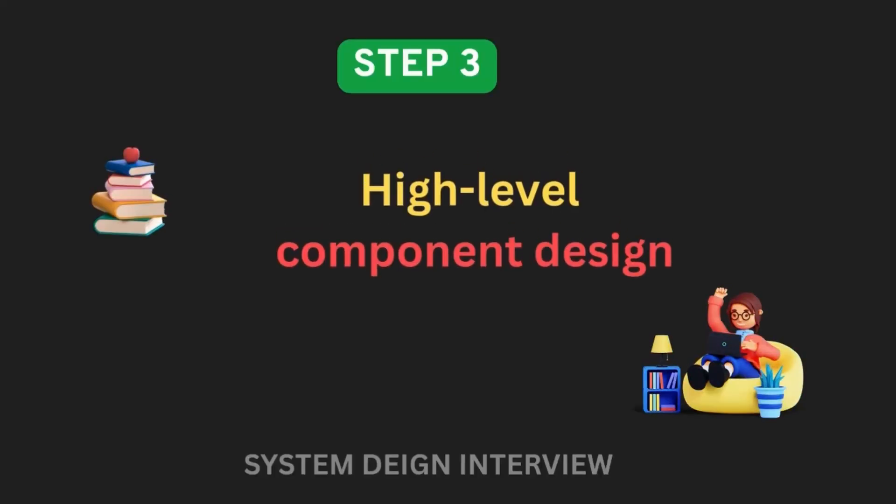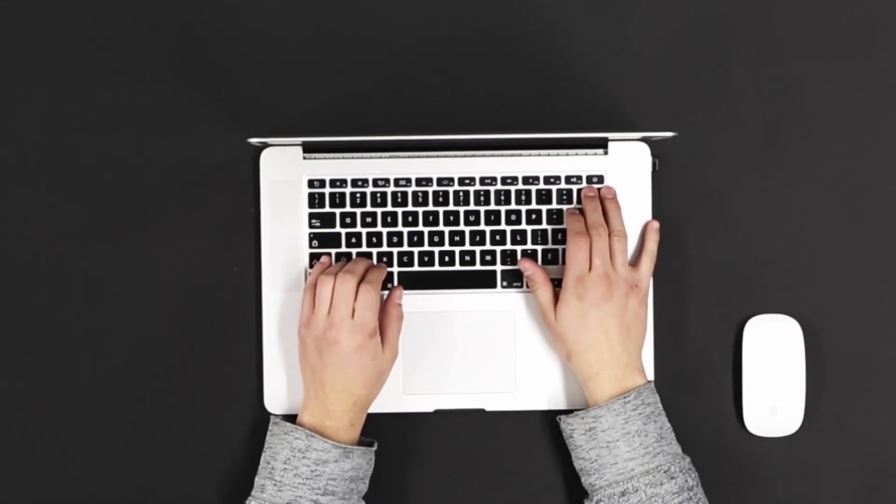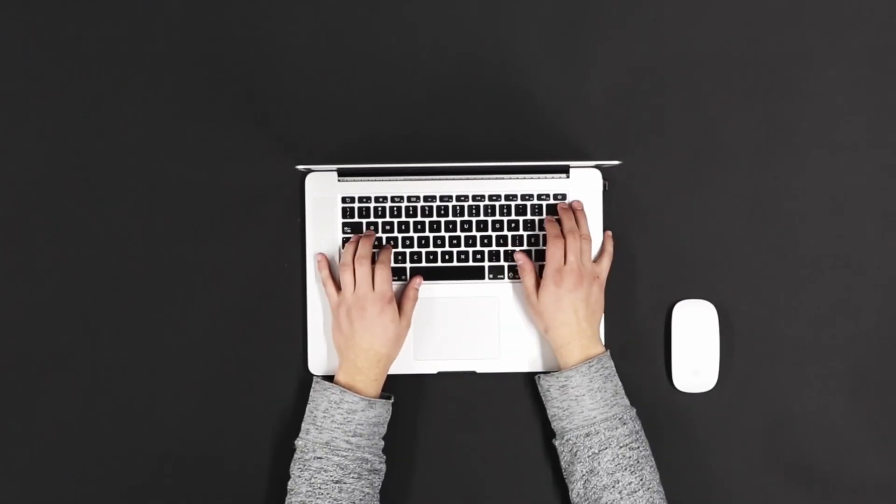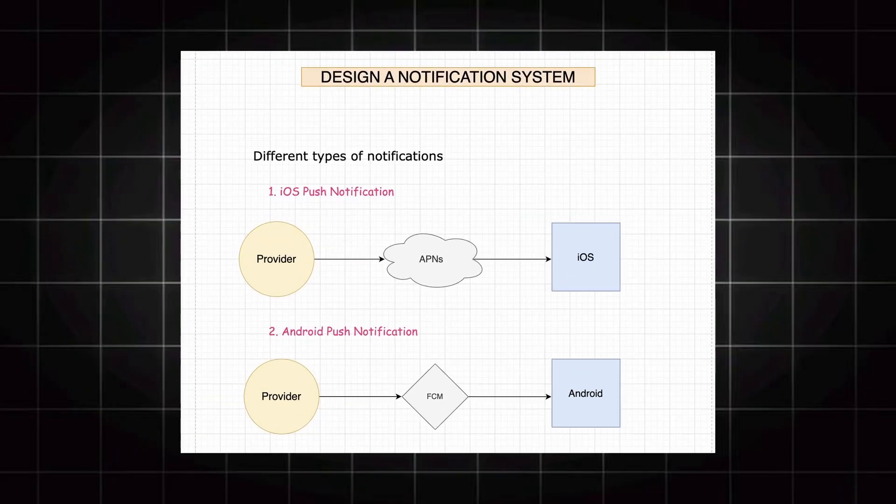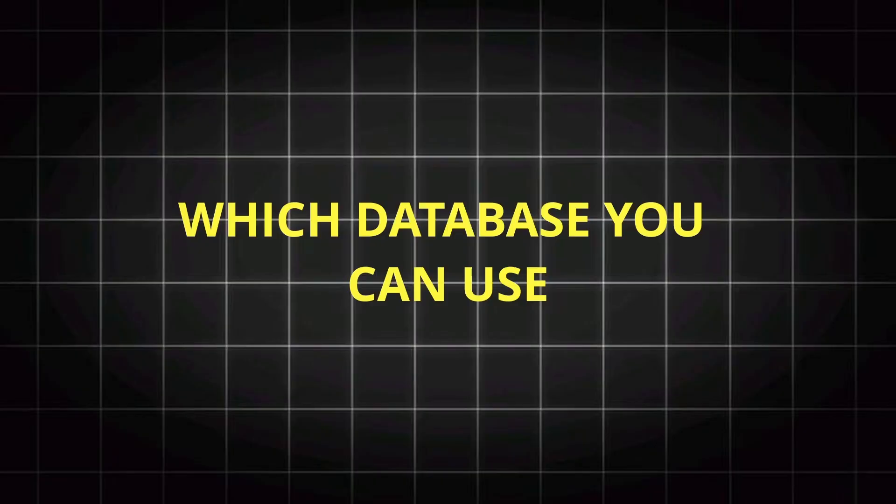Step 3 is High Level Component Design. This is where you show whether you are capable of building real-world applications. Identify the required components to solve the problem, draft the first foundational system design architecture, and outline the flow of data between them. While designing components, ask yourself which database to use, which caching technique to apply, and — most importantly — explain why you are using each component. The interviewer loves to hear the reasoning behind every decision.